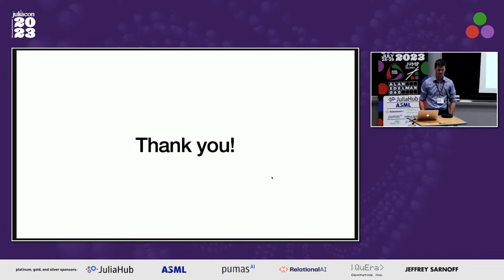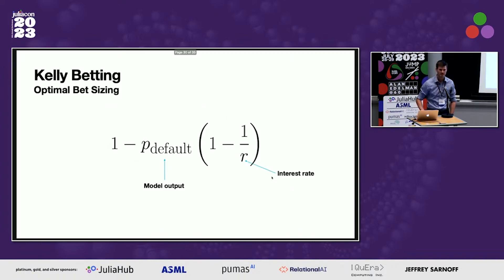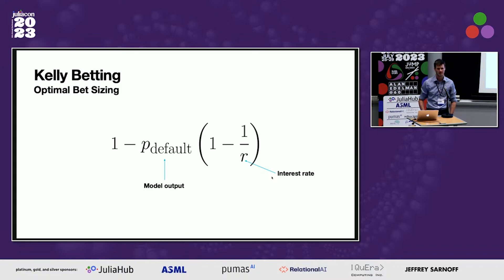Question about Kelly betting: the Kelly fraction treats each loan individually, but if multiple loans are contemporaneous and correlated, applying that fraction to each would assume they're uncorrelated. The speaker acknowledges this — there are additional Kelly formulas for multiple simultaneous bets that account for correlation. In practice, a half-Kelly bet is often used to reduce variance. These simplifications were made in the blog post and talk, but they are real considerations.